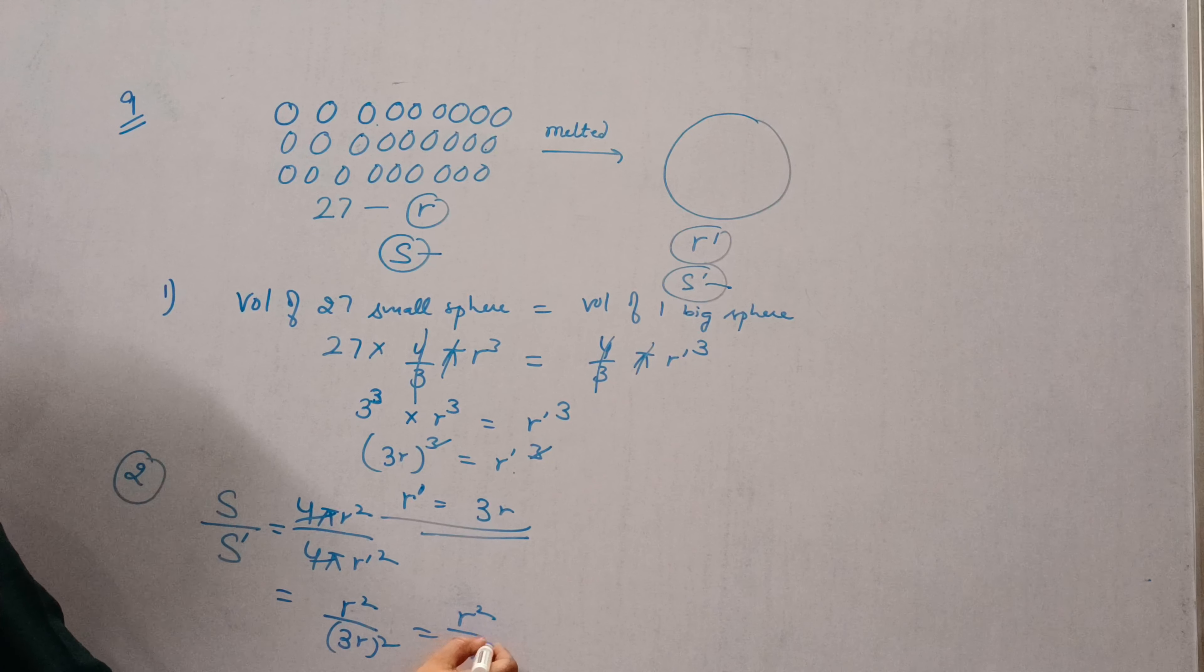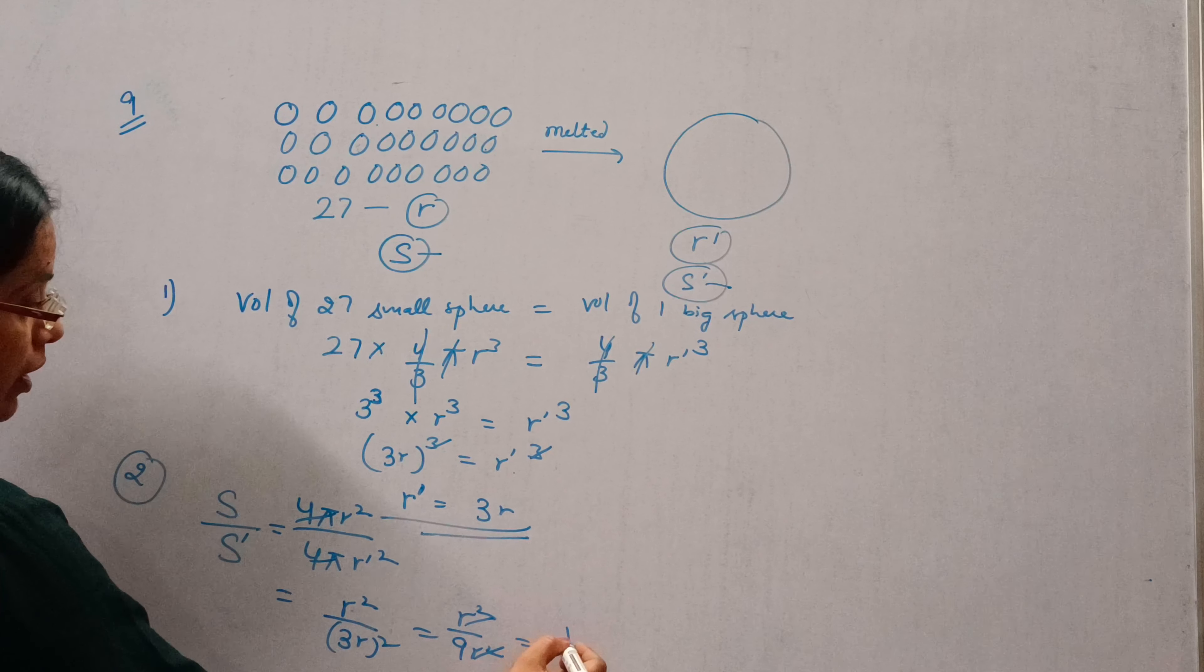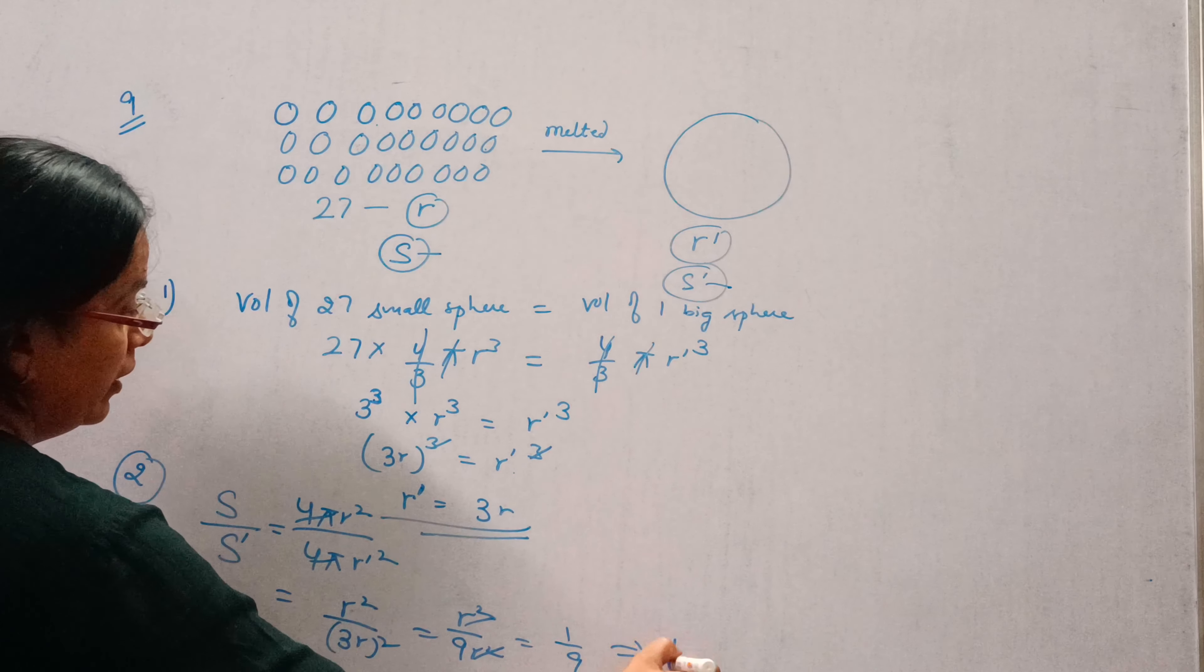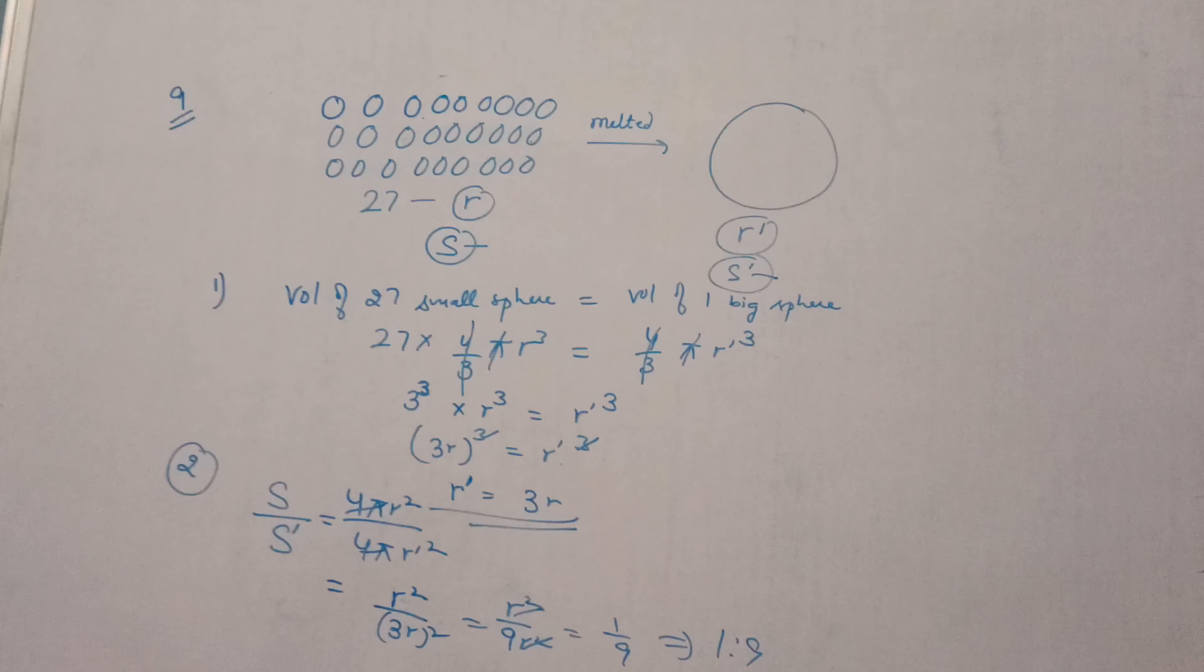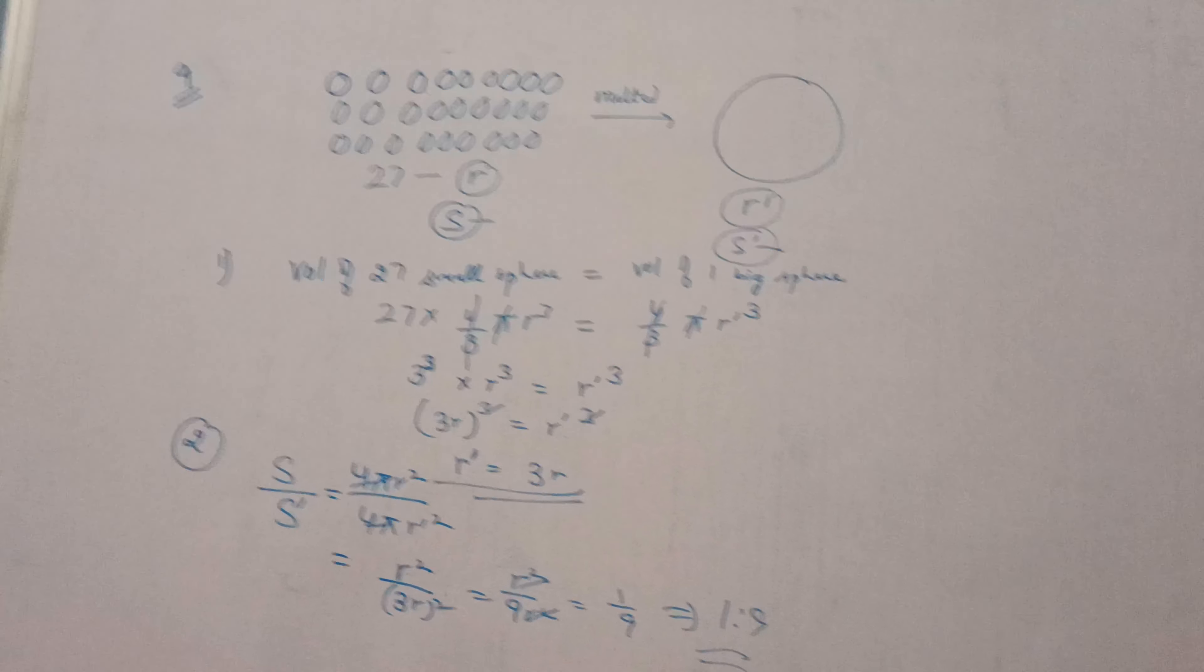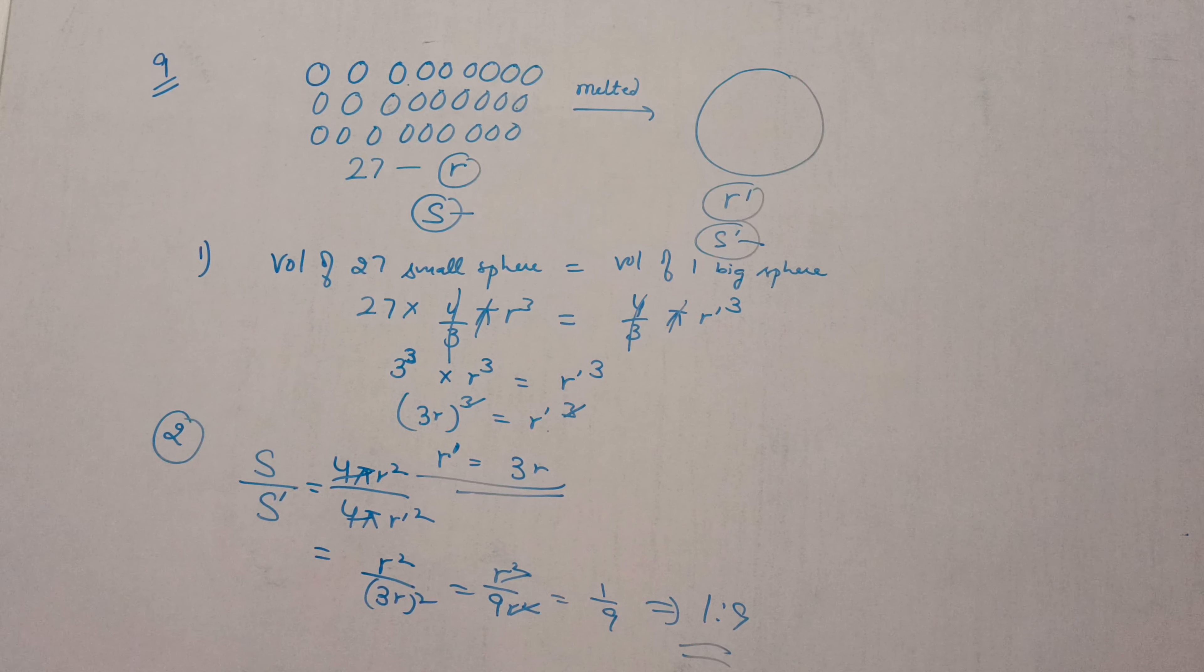So 3 times 3 is 9. Cut R square by R square. So the ratio will be 1 is to 9. This is question number 9 of exercise 13.8. I hope you all have understood. Thank you for watching. Have a nice day.